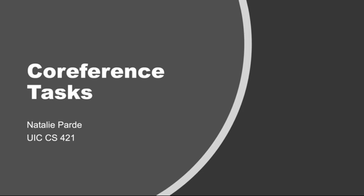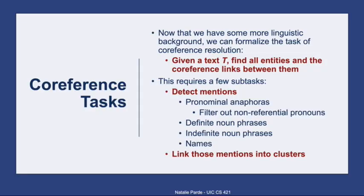We talked a bit already at a very high level about how coreference resolution systems typically work. In this video, we'll look more closely at some specific coreference tasks. First, we'll formalize the task of coreference resolution. Essentially, given a text sample T, in performing coreference resolution on T, we seek to find all entities and all coreference links between those entities. Doing so requires that we perform two different subtasks, as already mentioned previously.